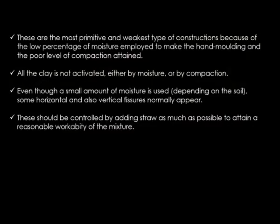In this particular lecture we are starting with hand-molded layered construction, one style of earthen construction. These are the most primitive and the weakest types of construction because of the low percentage of moisture employed to make the hand-molding and the poor level of compaction attained. In this construction, we do compacting with our hands, so the level of compaction that can be attained is very very limited, making the construction type very weak.